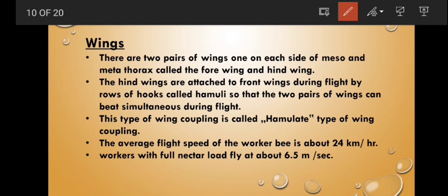Wings: there are two pairs of wings in honeybee. The wings present at mesothorax region are called forewings. The wings present at metathorax region are called hind wings. The hind wings are attached to front wings during the flight by the rows of hooks called hamuli. So that two pairs of wings can beat simultaneously during the flight. This type of wing coupling mechanism is called hamulate type of wing coupling mechanism. The average flight speed of worker bee is about 24 km per hour.